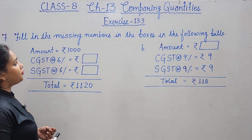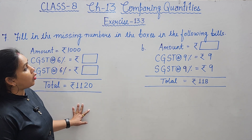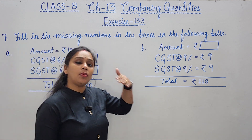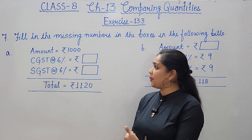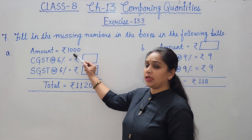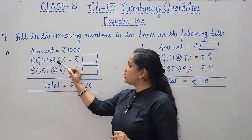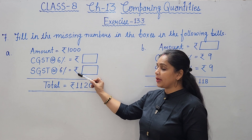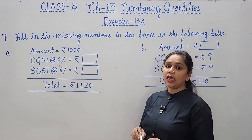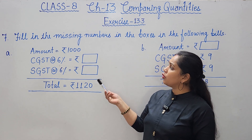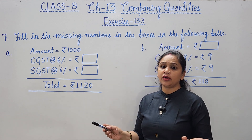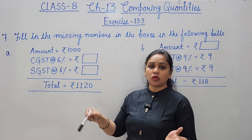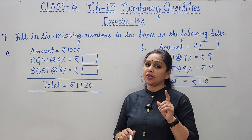Next, question 7: fill in the missing numbers in the boxes in the following bills. Here the amounts we just calculated in question 6 are given. Part A: amount is 1000 rupees, CGST 6%, SGST 6%, and total given is 1120 rupees. So it is clear that total paid was 1120 rupees for an object costing 1000 rupees, meaning 120 rupees was paid as GST.